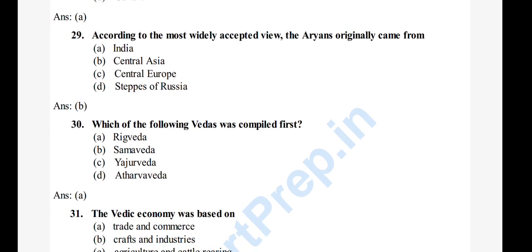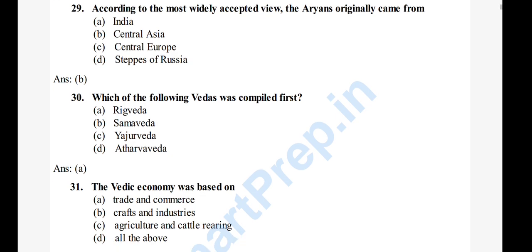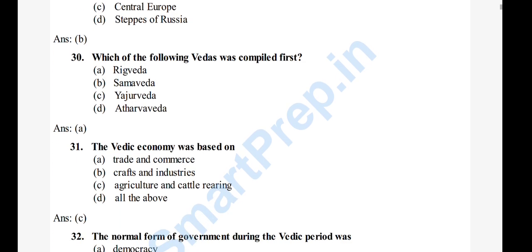Question 31: The Vedic economy was based on — A) trade and commerce, B) craft and industry, C) agriculture and cattle rearing, D) all of the above. The right answer is option C, agriculture and cattle rearing.